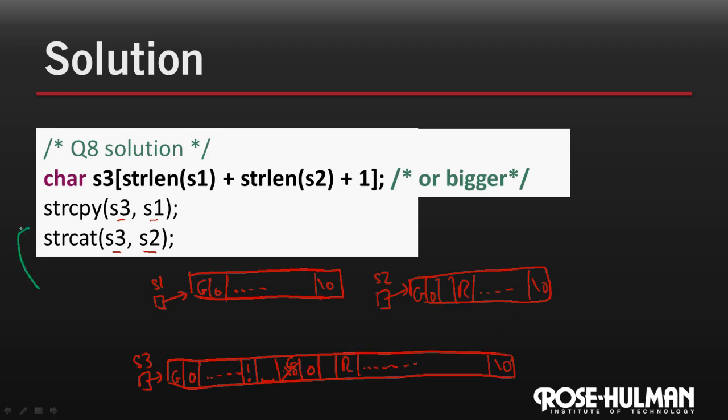So you might have thought of a solution that had string cat s3 to s1 first. Well how would that work? Well you'd have s3. Now when you told it to concatenate s1 onto the back of s3, it's going to look through this for a null character. The problem is until you initialize s3 with something, you have no idea if there's a null character there or not. So you could get a whole bunch of junk, and then the s1 and then the s2. And chances are you'd overwrite the end of it because you wouldn't have room for the junk there in the beginning.